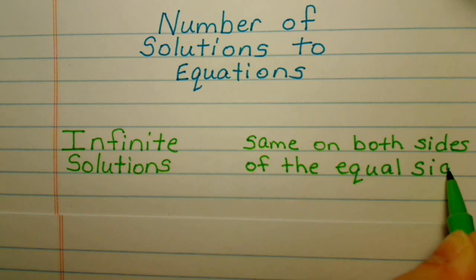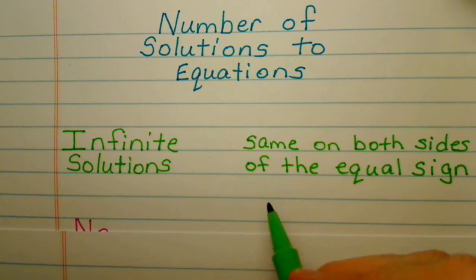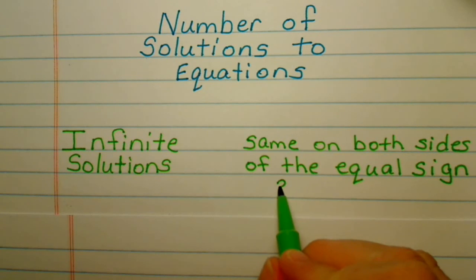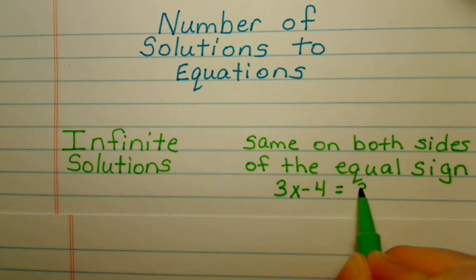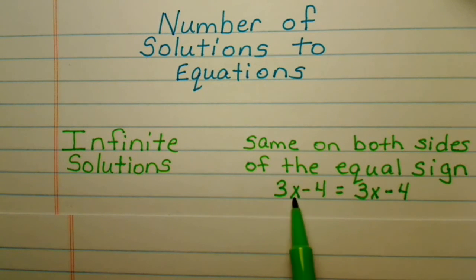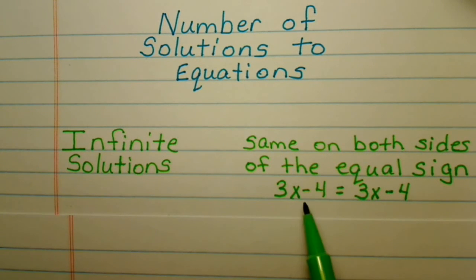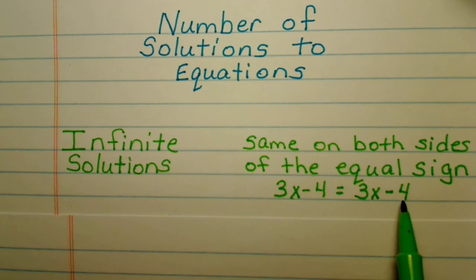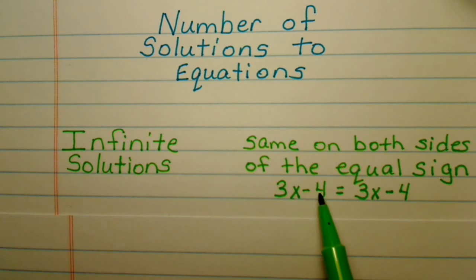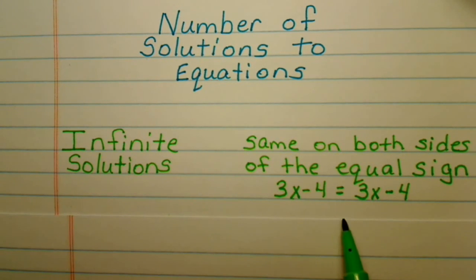For example, if you went through your first two steps of solving a multi-step equation and you got down to something where you have the same coefficient and variable on both sides, and the same constant on both sides, then your answer would be infinite solutions. We could plug any value in for x and this side would be equal to that side. For example, let's say we plugged in zero. Three times zero is zero, minus four is negative four. We would get the same thing over here — negative four is always equal to negative four.